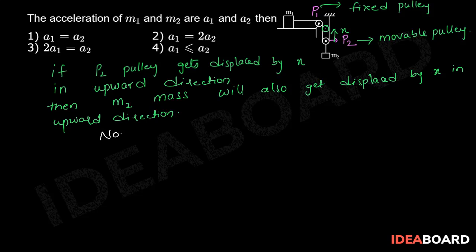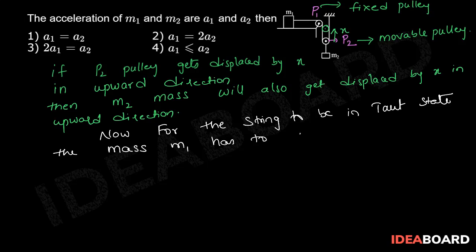Now, for the string to be in taut state, the mass M1 has to displace by 2X towards the left.